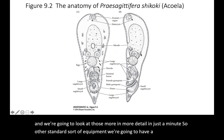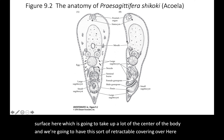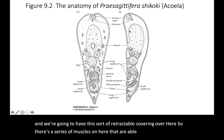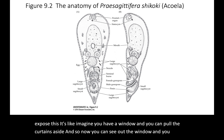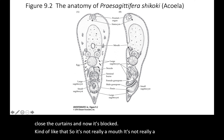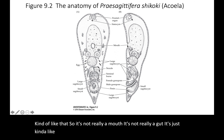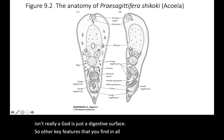Other standard equipment includes a big digestive surface that takes up a lot of the center of the body, and a retractable covering over it — a series of muscles able to pull apart and expose it. Imagine a window with curtains you can pull aside to see out, then close again. It's not really a mouth and not really a gut, just a curtain you can pull back to reveal more of the digestive surface.